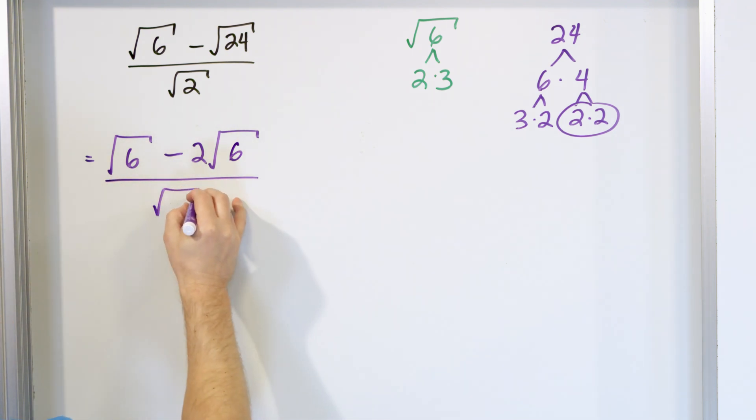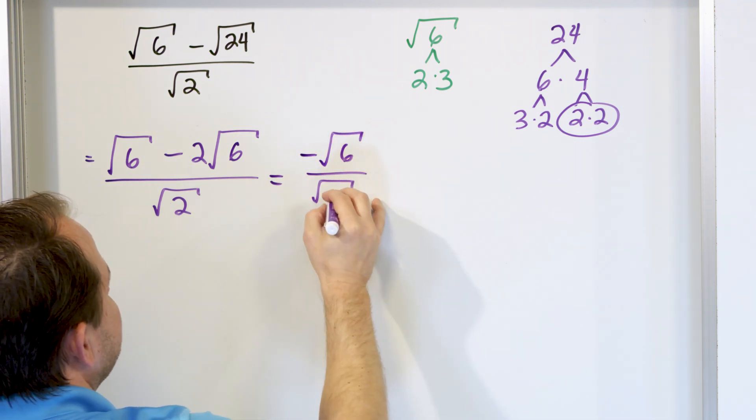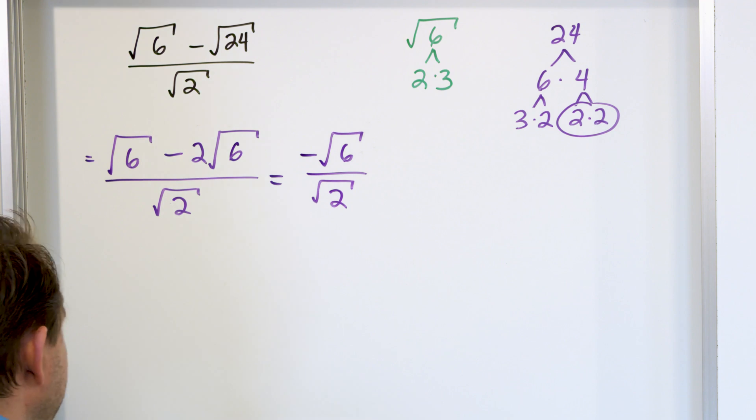And then I have on the bottom a square root of 2. Now you see why that was nice because now I have a square root of 6 minus 2 square root of 6. So I have 1 minus 2, which is going to be negative 1 square root of 6. On the bottom, I will have a square root of 2.